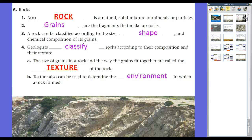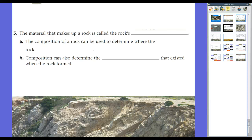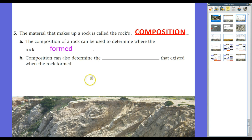Texture can also be used to determine the environment in which a rock was formed. The smaller the texture, the bigger the forces that were grinding down the minerals. If they're bigger, there might not have been as many large forces at work. The other way we classify rocks is based on the material that makes up the rock — that's what we call the rock's composition. The composition of a rock can be used to determine where it was formed, whether it's sedimentary, igneous, or metamorphic, and the conditions that existed when it formed.